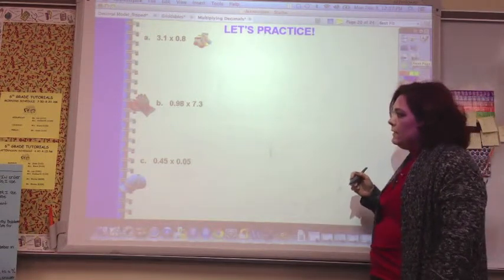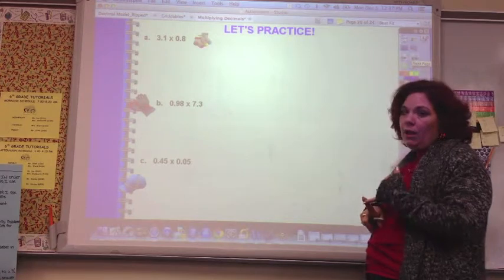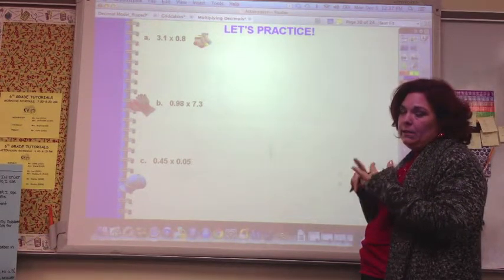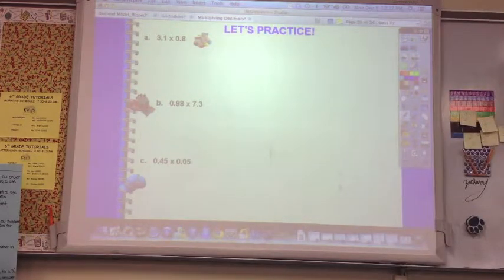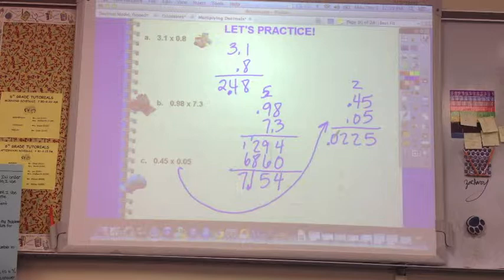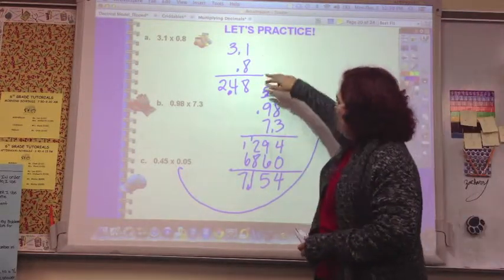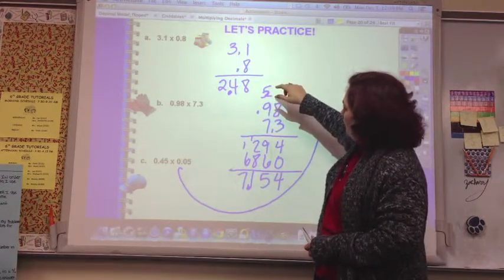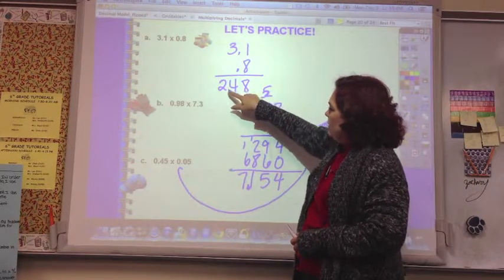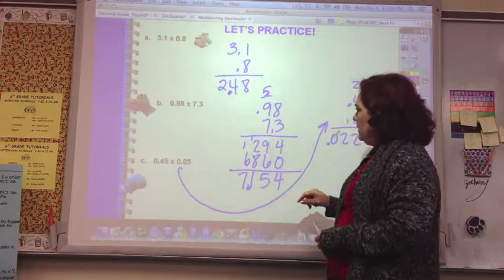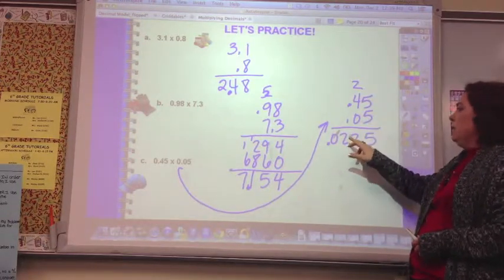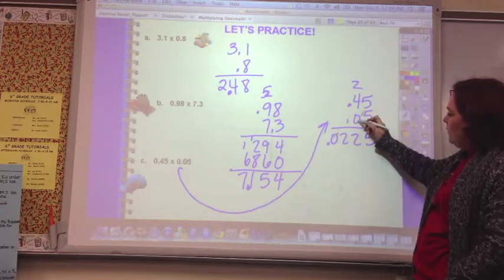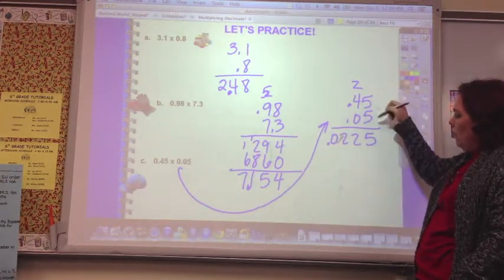So go ahead and practice these and see if you can multiply, just like normal. Count up the decimal places, move the decimal point, place the decimal point in the answer. Okay, as you can see, this one, just multiply like normal, and you're going to get 24, 8, 248, and then 2 decimal places, 2 decimal places over. This one, 3 decimal places, 3 decimal places over. This one, 4 decimal places. So I got 225, and I had to add the zero and move it over. You don't have to do 0, 0, 0. Just add up the total of decimal places and move it over.